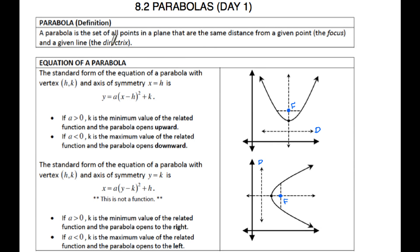What this definition is saying is that this parabola, this curve, is a set of all points in a plane that are the same distance from a given point, the focus, and the directrix. So if I have any point on this parabola, the distance from the focus to the directrix should be equal. Similarly, if I had this other point, the distance from my focus should equal the distance from my directrix.